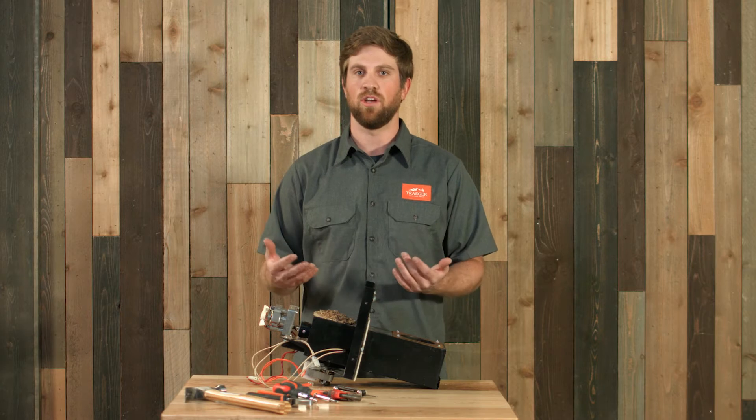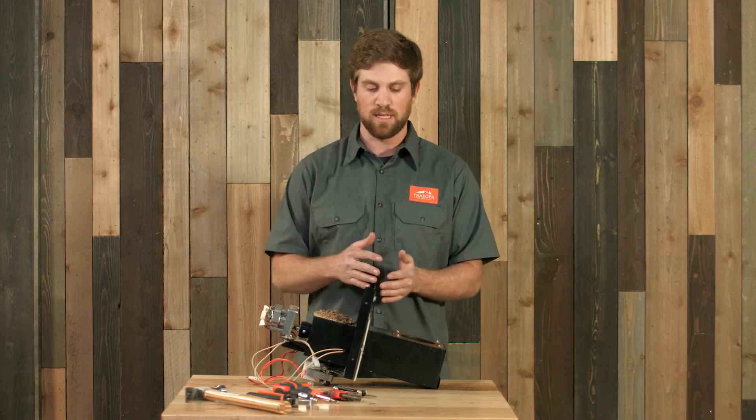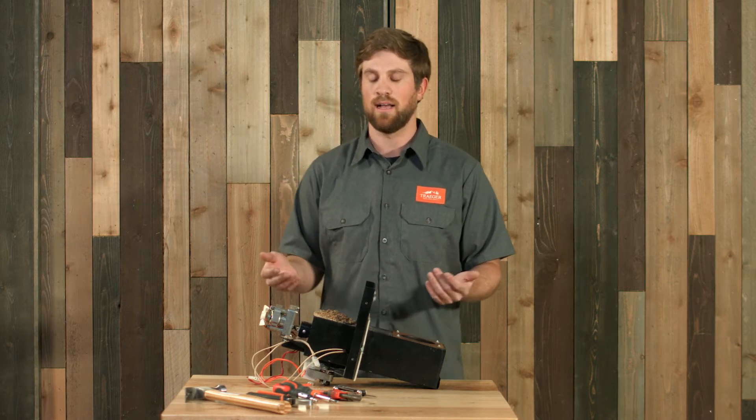Right now, just so we can show you a better closer look at what's going on, we pulled the entire hopper burner assembly out of a junior grill that has an auger jam.